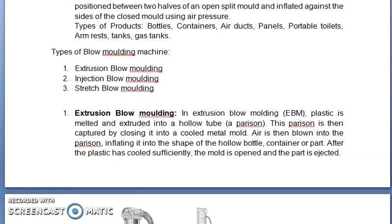In extrusion blow molding (EBM), plastic is melted and extruded into a hollow tube — a parison. The parison is then captured by closing it into a cooled metal mold. Air is then blown into the parison, inflating it into the shape of the hollow bottle, container or part. After the plastic has cooled sufficiently, the mold is opened and the part is ejected.